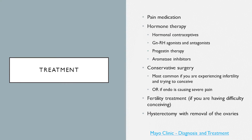As common as it is, endometriosis does have treatment. Since the most common symptom is pain, the most common treatment is pain medication. This doesn't necessarily mean high levels of narcotics — it can be as simple as your doctor recommending Tylenol or Advil, as well as alternative methods of pain reduction like heating pads, mindfulness, and deep breathing. Hormonal therapy is also used, including hormonal contraceptives such as different kinds of birth control, GnRH agonists and antagonists, progestin therapy, and aromatase inhibitors.